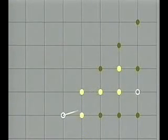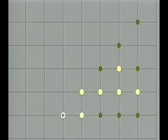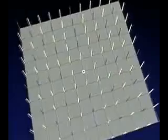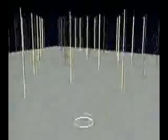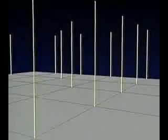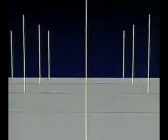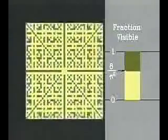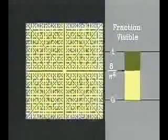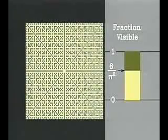The next example comes from number theory. Put a yellow dot at each lattice point whose rectangular coordinates have no prime factor in common — another way of saying this is put a yellow dot at each lattice point that's visible from the origin. The dark dots are hidden behind the bright ones. The probability that a lattice point is visible from the origin is 6 over pi squared.